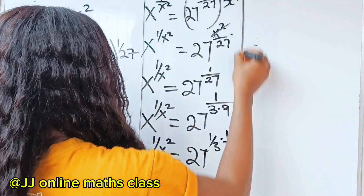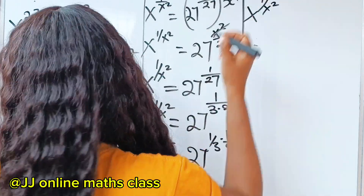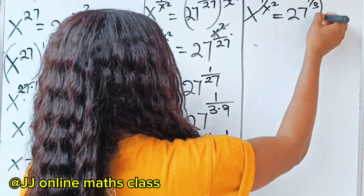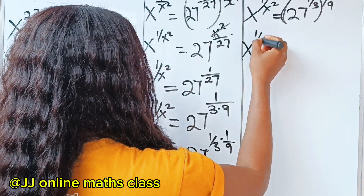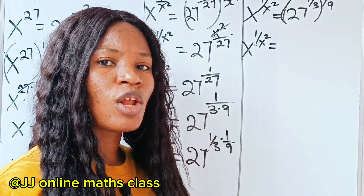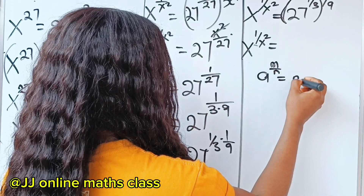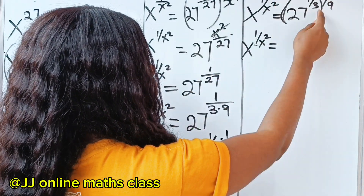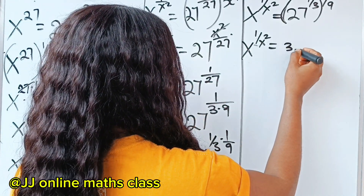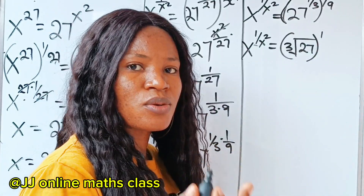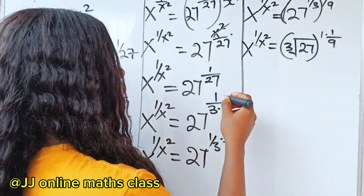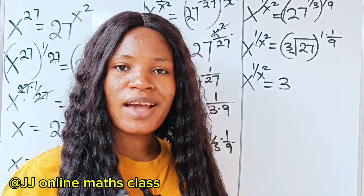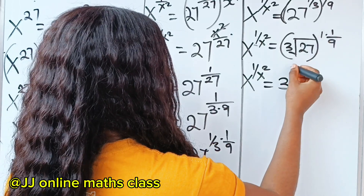We have x to the power of 1 over x squared is equal to 27 to the power of 1 over 3, raised to the power of 1 over 9. Now I want us to recall the law of exponents that states that a to the power of m divided by n is equal to the nth root of a raised to the power of m. So we can write this as the cube root of 27 raised to the power of 1, which is still 1, then raised to the power of 1 over 9. Cube root of 27 is 3, so we have 3 raised to the power of 1 over 9.